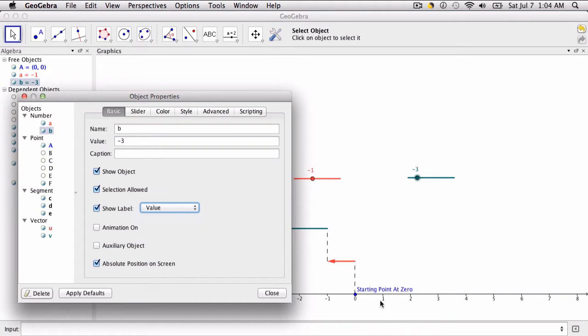And then for these two points, the starting point A and the final point F, the answer of each addition problem, I'm just going to change this a little bit. So the caption here just says start, so starting point at zero. And then here, point F will say just result.